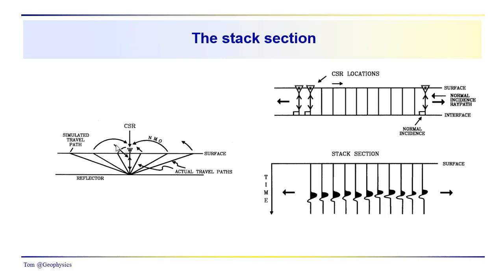Here we've got a three-fold data set. We're illustrating that the process of NMO correction carries all the sources and receivers over to the midpoint common source receiver record. We go through the stacking process and get a normal incidence record at each point along the surface.